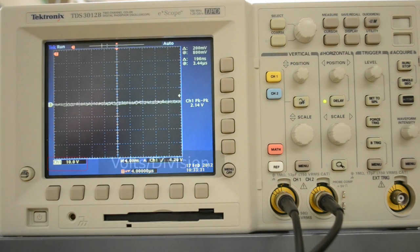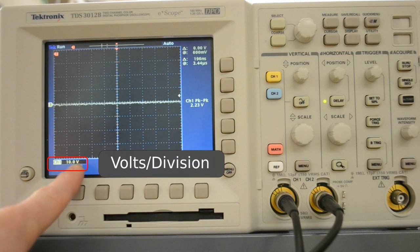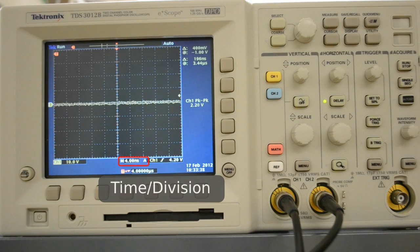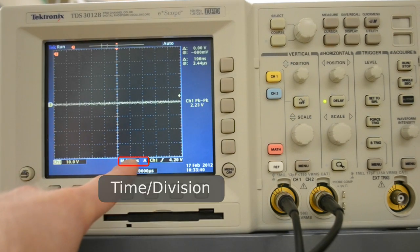The volts per division are displayed here. Right now it is 10 volts, and time per division right now is 4 nanoseconds.